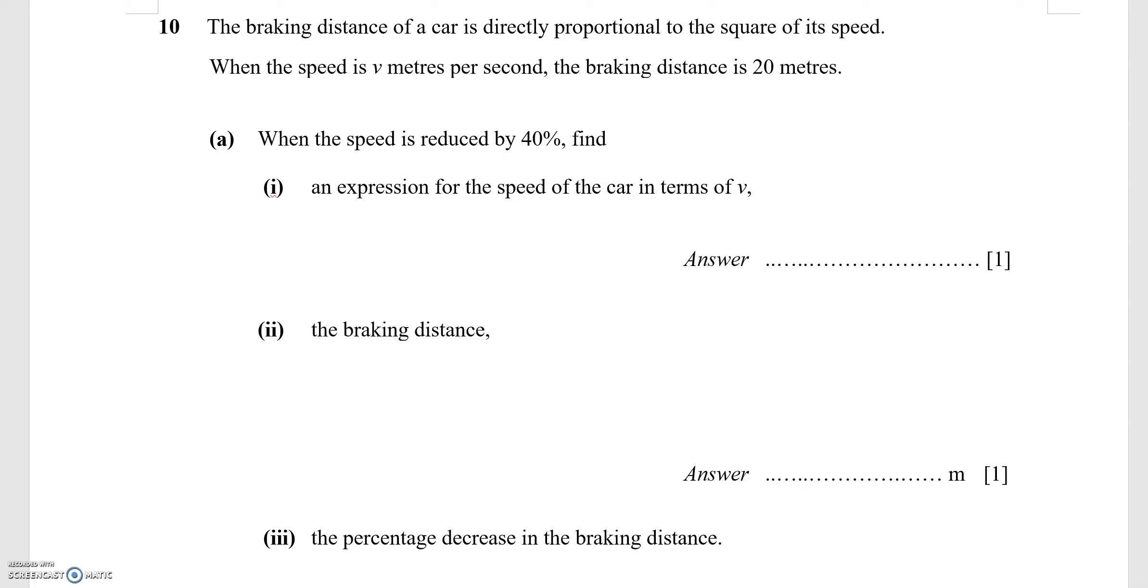the speed of the car is now 60%. So 60% of v can be expressed as 60 over 100 times v, which gives us 3 over 5 v.